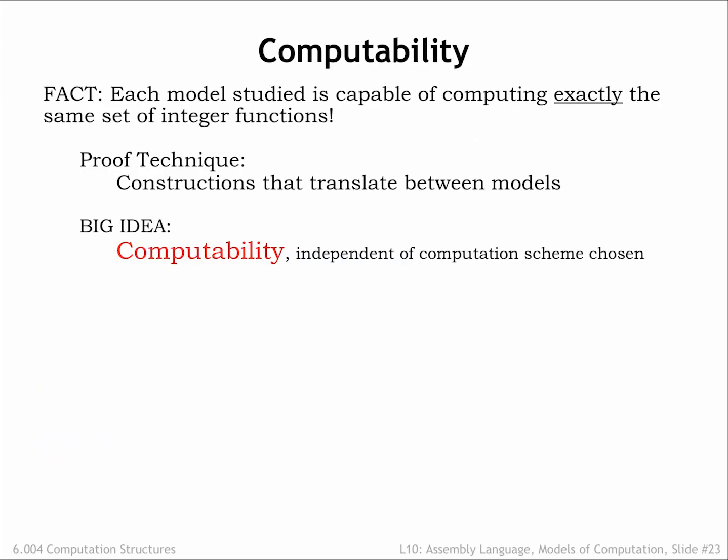It turned out that each model was capable of computing exactly the same set of integer functions. This was proved by coming up with constructions that translated the steps in a computation between the various models. It was possible to show that if a computation could be described by one model, an equivalent description exists in the other model. This led to a notion of computability that was independent of the computation scheme chosen.